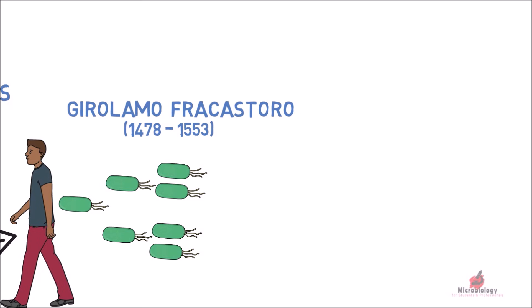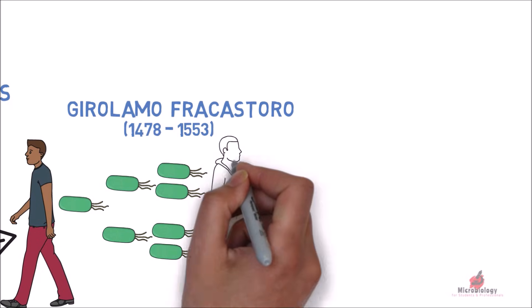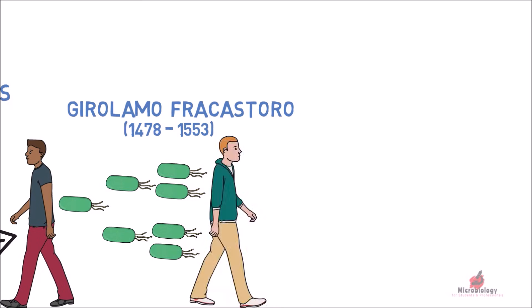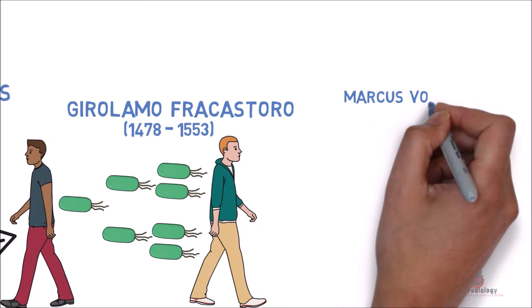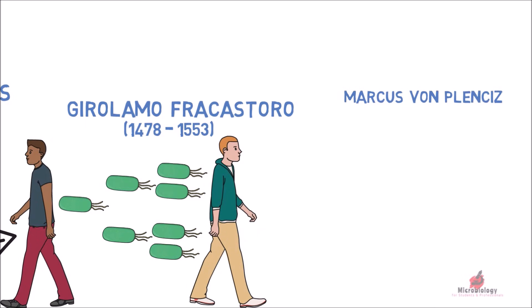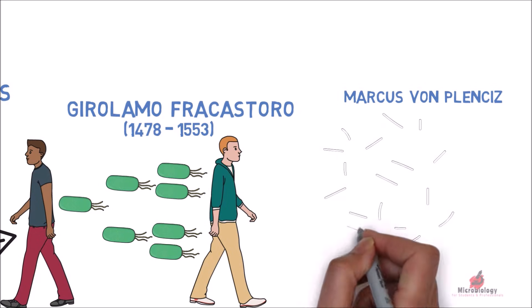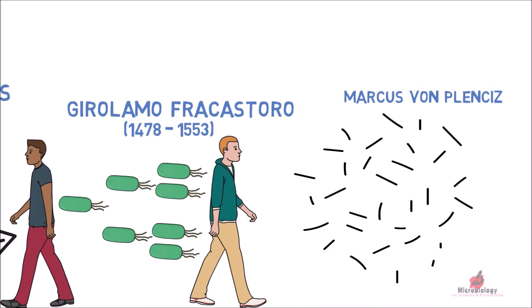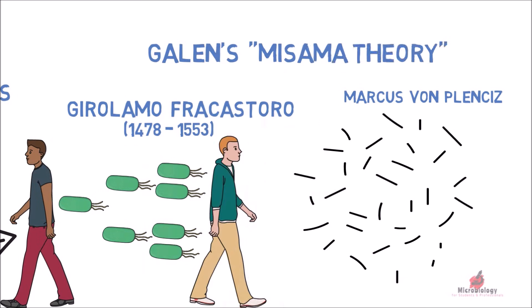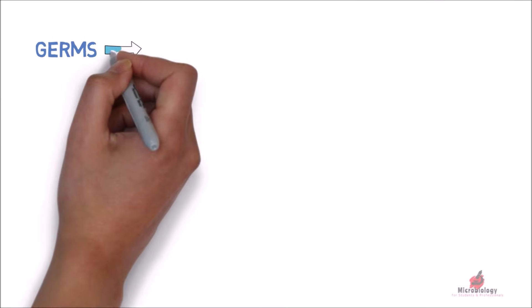Girolamo Fracastoro suggested that diseases are caused by invisible living organisms transmitted from one person to another. This was further supported by Marcus von Plenciz. Plenciz not only stated that living germs are the causative agents of diseases, but also said that different germs are responsible for different diseases. However, these views were dominated by the miasma theory.